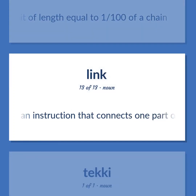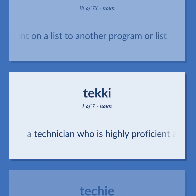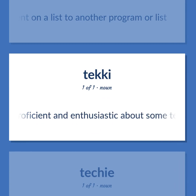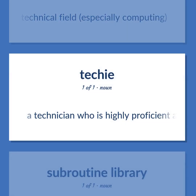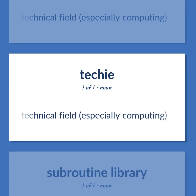Computing. Link: An instruction that connects one part of a program or an element on a list to another program or list. Hacker: A technician who is highly proficient and enthusiastic about some technical field, especially computing.